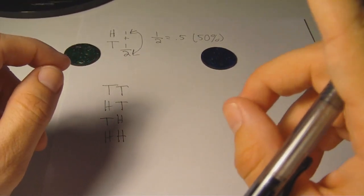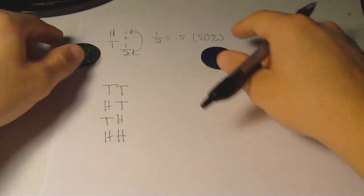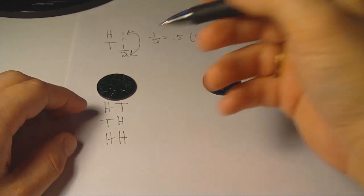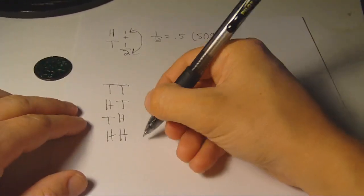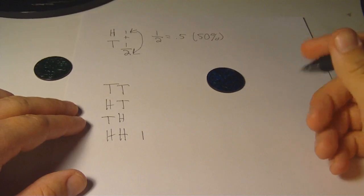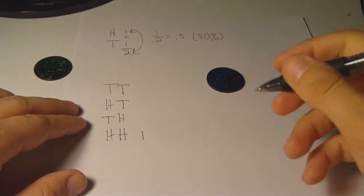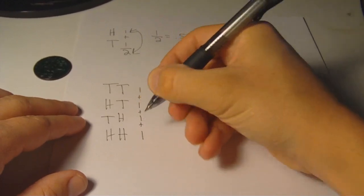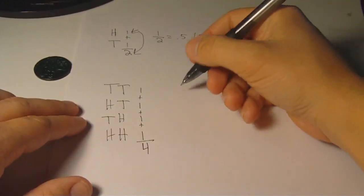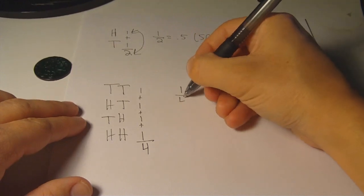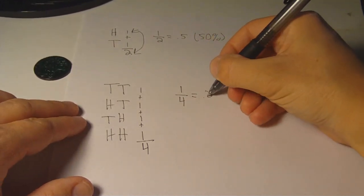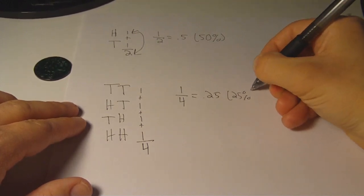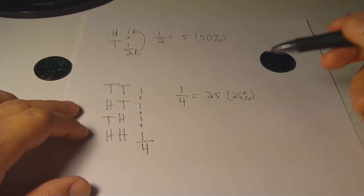Moving on, let's say we want to find the probability of flipping two heads. We take the number of results for this, which is 1, and divide it by the total number of results, which is 4, as shown here. So we have 1 divided by 4 equals 0.25, which is 25% — and that is the chance of flipping two heads.